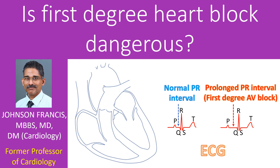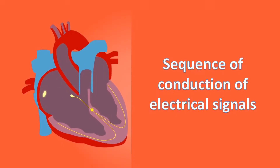The waves on an ECG are P, QRS complex, and T wave. The normal interval between the onset of the P wave and the onset of the QRS complex is up to one fifth of a second. When this interval is increased, it is called first degree heart block, or first degree atrioventricular block. This interval is known as the PR interval, which is the time taken for the electrical activity to travel from the upper chambers to the lower chambers.